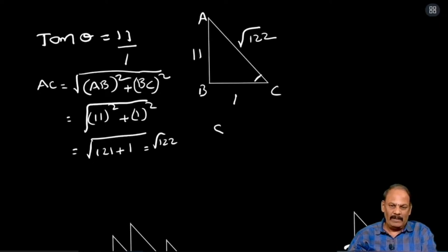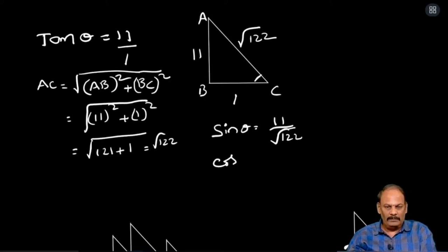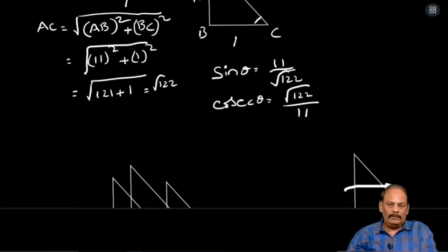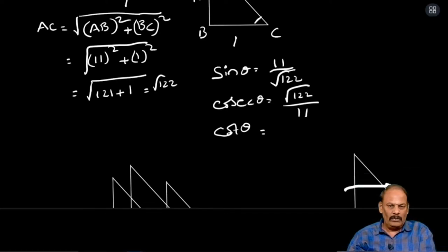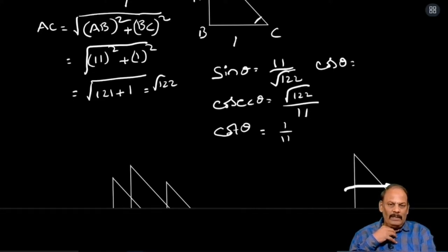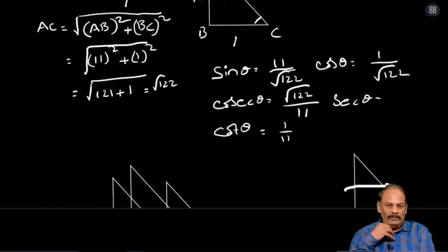Sin theta is required: sin theta means opposite by hypotenuse, that is 11 by root 122. Cosecant: reverse to sine, that is root 122 by 11. Cot theta: reverse to the tan, that is 1 by 11. Secant: root 122 by 1.